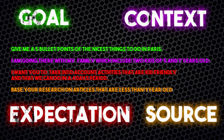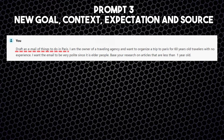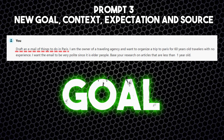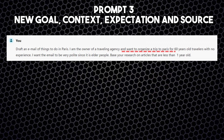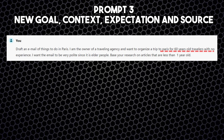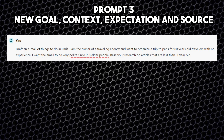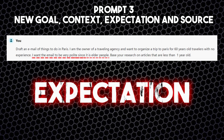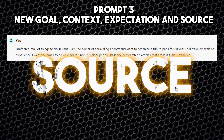Now let's switch things a little bit. In my previous life, before having kids, I was running a travel agency and organizing trips to Paris. Here is the new prompt: 'Draft an email of things to do in Paris.' — that's the Goal. 'I am the owner of a travel agency and want to organize a trip to Paris for 60-year-old travelers with no experience.' — that's the Context. 'I want the email to be very polite since it is for elder people.' — that's the Expectation. 'Base your research on articles that are less than one year old.' — that is the Source.